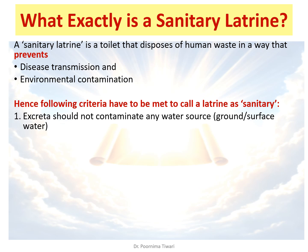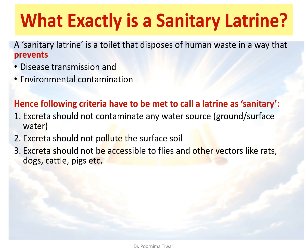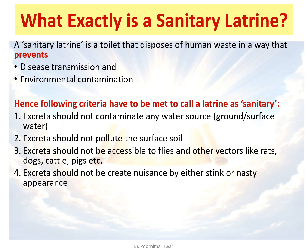Second: the excreta should not pollute the surface soil. It should be deep enough so that microorganisms do not reach the surface soil, meaning people walking barefoot should not be exposed to disease-causing organisms. Third criteria: the excreta should not be accessible to flies and other vectors. Fourth criteria: the excreta should not become a nuisance to the public by being an eyesore, having a nasty appearance, or by stinking.